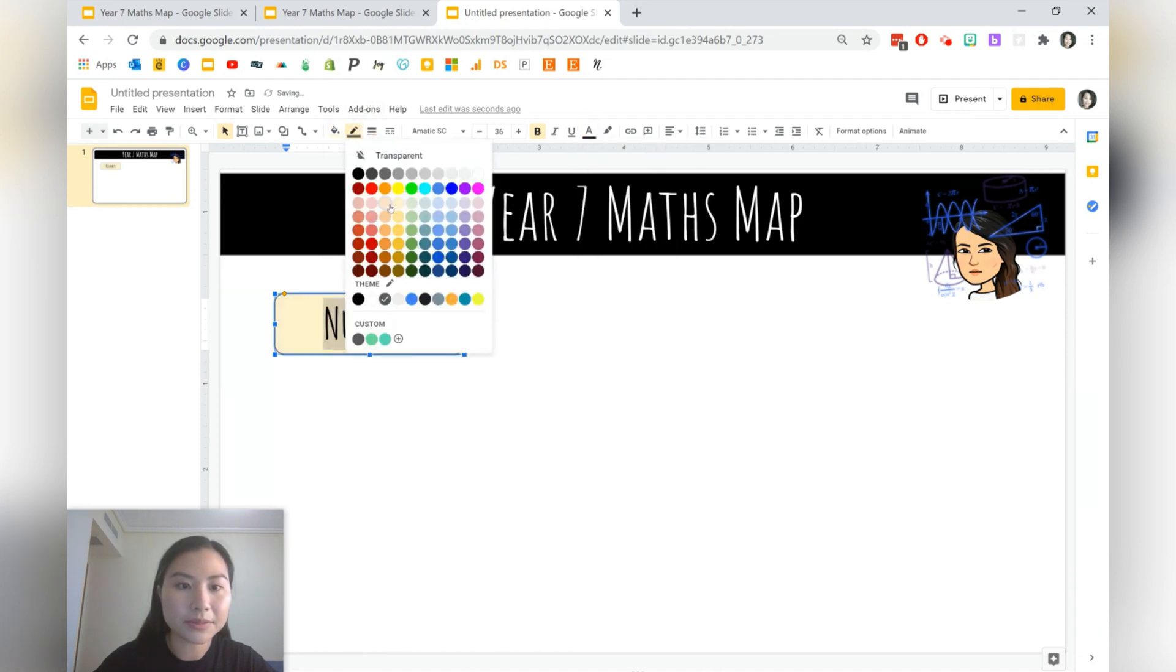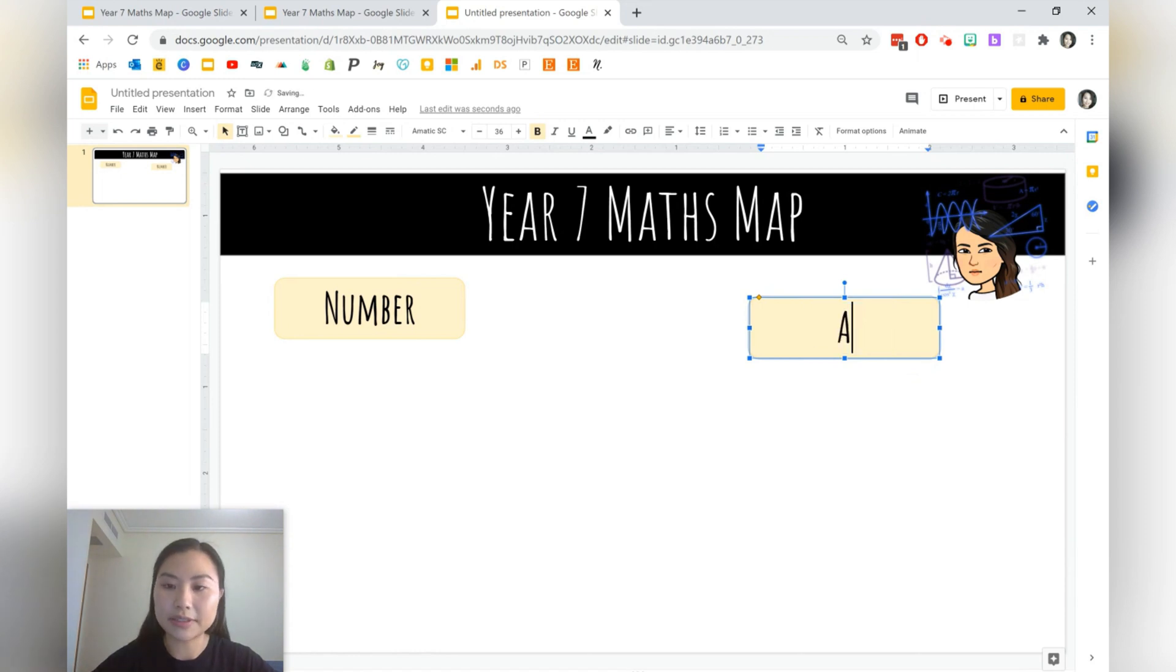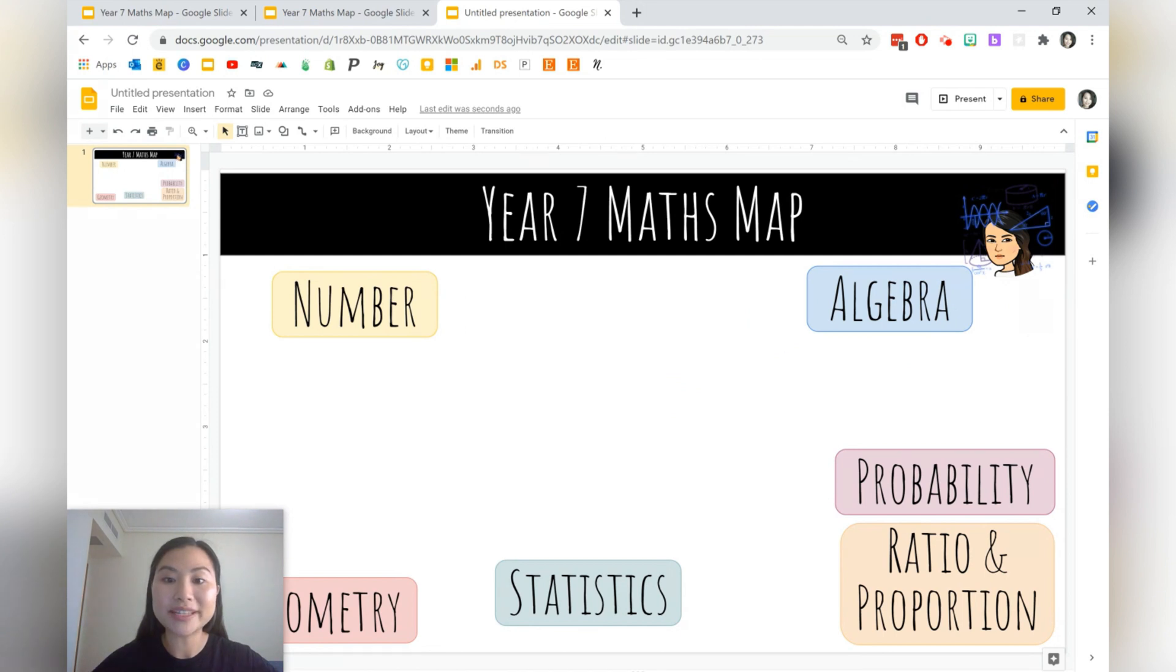Okay and the fill color as well. So this is what it looks like and just go ahead and add all the different big topics within the subject. So the next one will be algebra for me. So here we have the subject map with all the large topics and now we're ready to include all the concepts or subtopics. So just go to text box and we'll just add our first subtopic or concept. So the first one for me would be function machine. I'm just going to change the font so it matches and just keep adding all the concepts there.